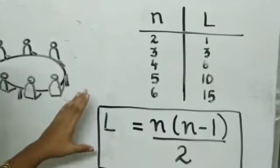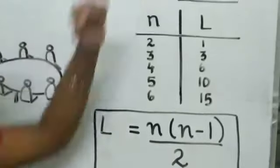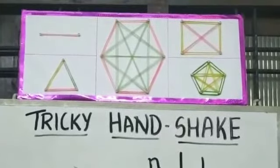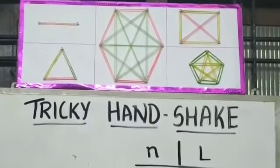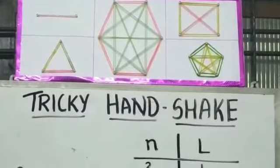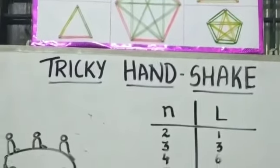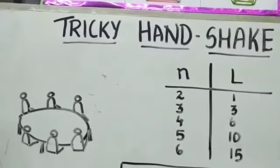If we still have confusion, we can see in case of five points, the number of line segments is five into four by two, that is ten. We already got ten. Okay, now we are coming back to the life situation that I said earlier.